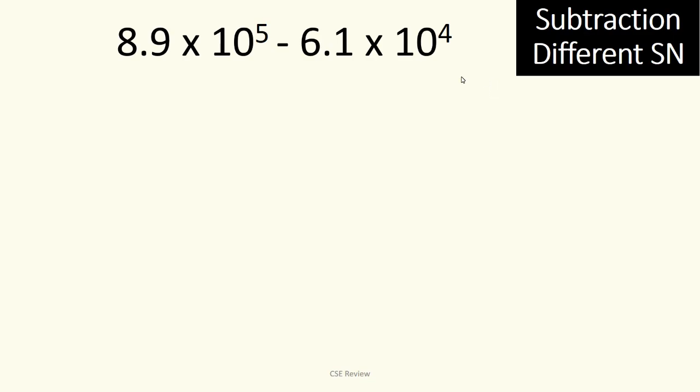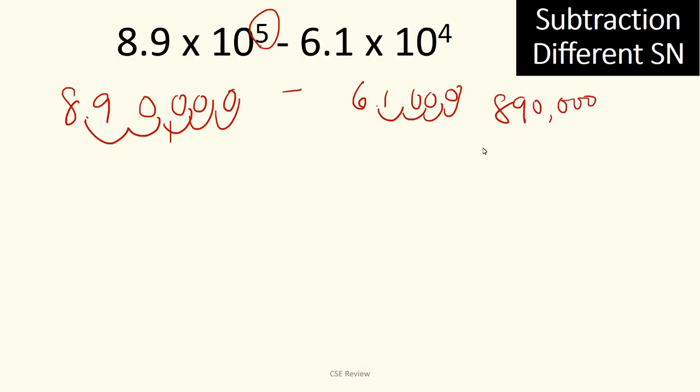Pag hindi, the best thing to do would be to convert them or to change them both into something with the same scientific notation. Now, in case you want to convert it, this will be 8.9, move the decimal places to the right. So 1, 2, 3, 4, 5. So, that is 890,000 minus 6.1, let's move it 1, 2, 3, 4, so 890,000 minus 61,000. So, again, you can do this. Then convert it back to scientific notation or pagparehuhin natin sila.